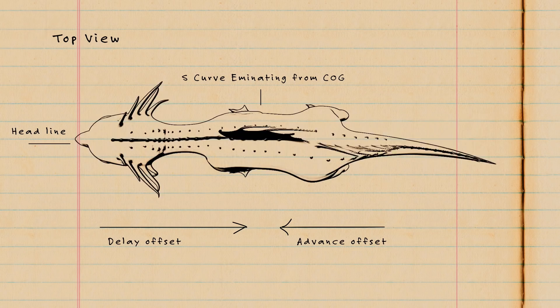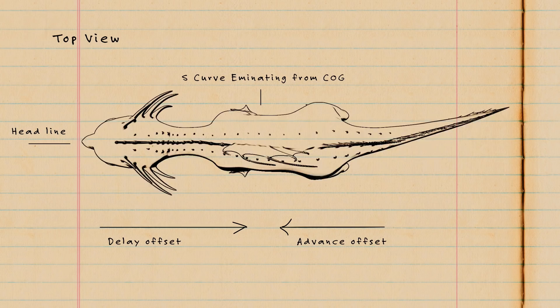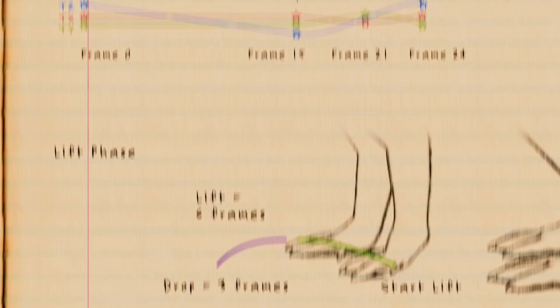Now once we've got that looking good, it's time to work with the feet. Rounded to the nearest frame, we get a contact phase of 15 frames and a lift phase of 9 frames. The lift phase will then be further divided into the rise and plant stages, where C will equal 9, A will equal 6, and B equals 3.